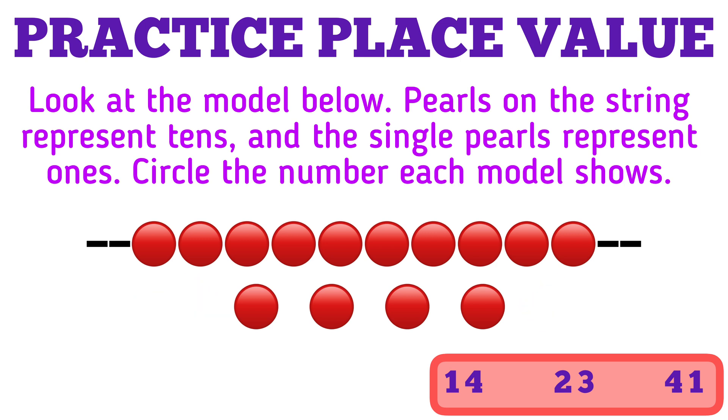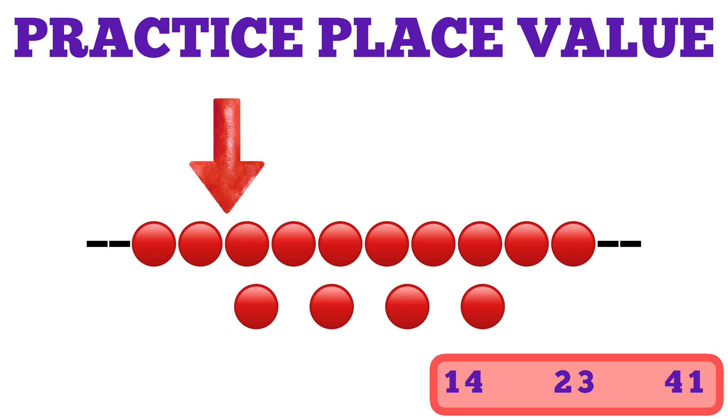So we can do this a couple of different ways. The first way I'm going to show you is just to count by tens and ones. You can count how many pearls on a string there are, so this is going to be tens, and you're going to count by 10. There's only one tens, so we're going to go 10, and then we're going to count up 11, 12, 13, 14.